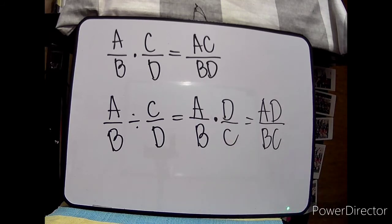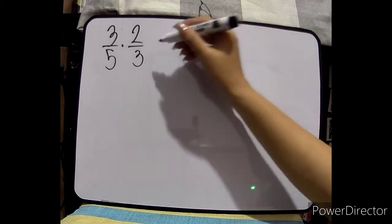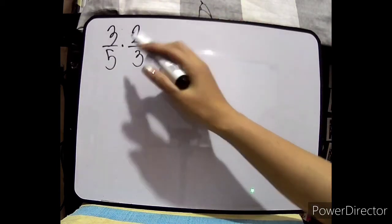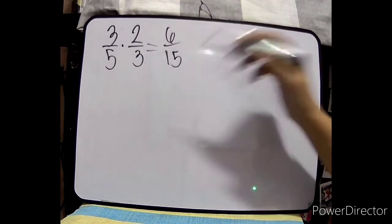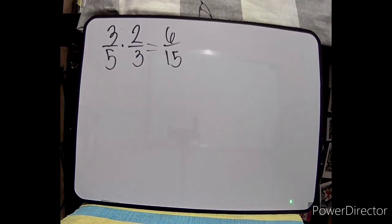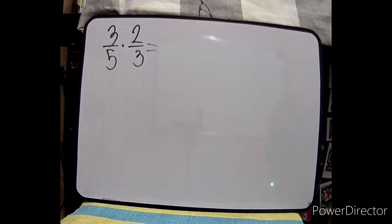Let me give you an example and show you how I multiply and divide fractions. First, given is 3/5 times 2/3. Some people directly multiply and get 6 over 15, then reduce to lowest terms after. If you're good at finding the GCF, you can multiply first and then find the GCF. That method is fine too.